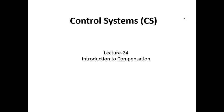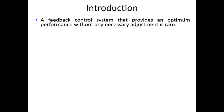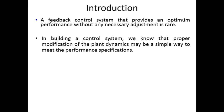Lecture number 24 of Control Systems is about introduction to compensation. A feedback control system provides optimum performance without any necessary adjustment. If there is a feedback control system and we do proper adjustment, then it will give optimum performance — only a very small amount of adjustment is needed to achieve optimum performance.